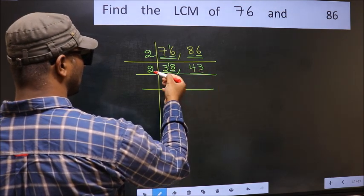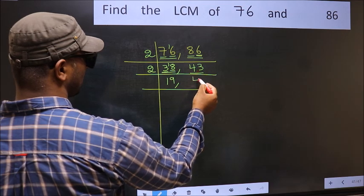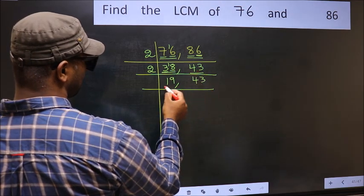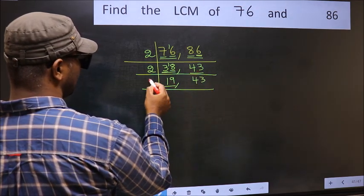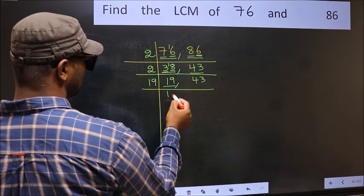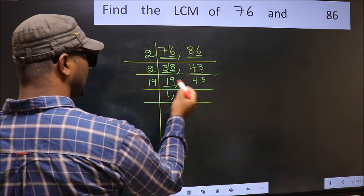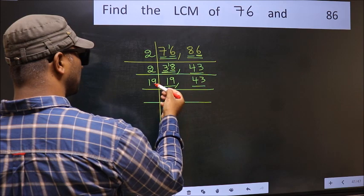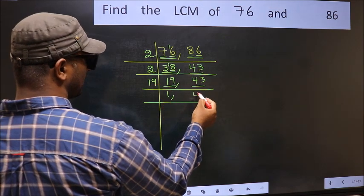The other number, 43. Not divisible by 2, so you write it down as it is. Now here we have 19. 19 is a prime number, so 19 once 19. The other number, 43. Not divisible by 19, so you write it down as it is.